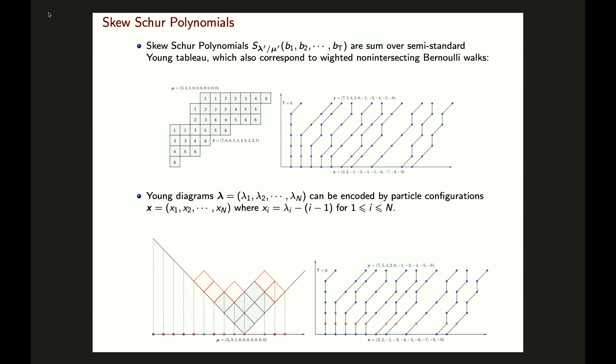For those Schur polynomials, parameterized by Young diagrams lambda and mu, we look at S of lambda-transpose over mu-transpose, evaluated at values B₁ up to Bₜ. It is given as a sum over semi-standard Young tableaux — fill the skew shape with numbers from 1 to t, strictly increasing vertically and non-decreasing horizontally.